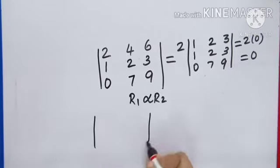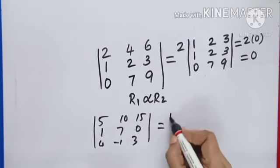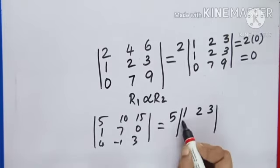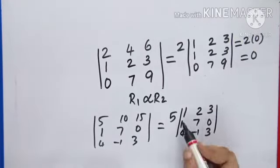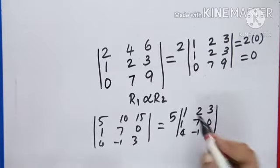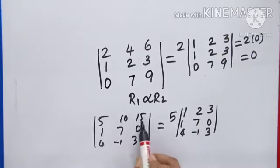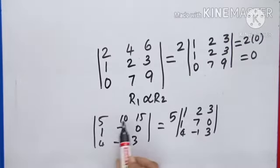Another example: determinant with first row 5, 10, 15 and other rows 1, 7, 0 and 4, -1, 3. The common factor in row 1 is 5. Take 5 out, leaving row 1 as 1, 2, 3; rows 2 and 3 unchanged. Here there's no identical rows, so we must expand using +, -, + symbols. The key property: any number common to an entire row can be factored out, and the remaining determinant is written as usual.